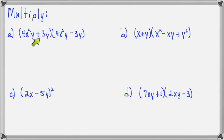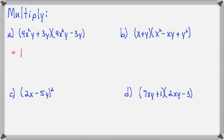Looking at the first new example, it seems to be a sum and difference of the same two terms. That means when we use the FOIL method, we can skip the O plus I step because it adds up to 0. So first times first is 4x squared y times 4x squared y, which is 16x to the fourth y squared. O plus I adds up to 0. Then last times last is going to make negative 9y squared.